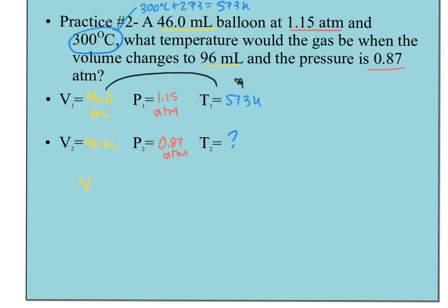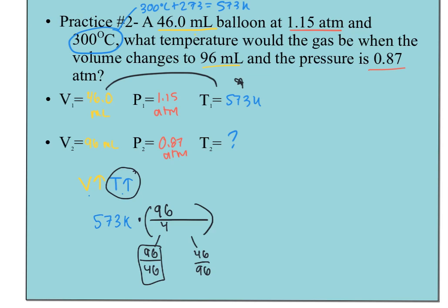Starting with temperature and volume: volume is going up, meaning the container is getting bigger. Since volume and temperature have a direct relationship, if volume gets bigger, temperature has to get bigger too. Temperature is the one without a partner in this combo, so I take 573 Kelvin and multiply by the volume ratio. I want temperature to get bigger, so I put 96 over 46. Taking 96 divided by 46 and multiplying by 573 gives a new temperature of 1196 Kelvin.